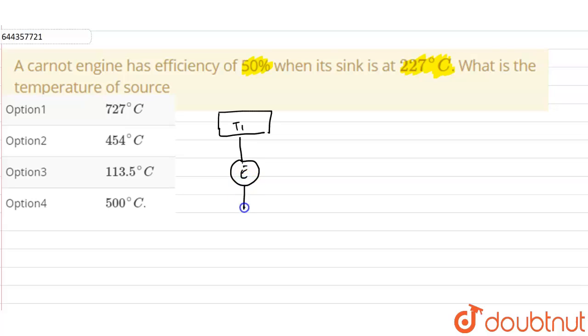227 degree Celsius, so T2 is given to us as 227 degree Celsius or what we can say as 500 Kelvin.